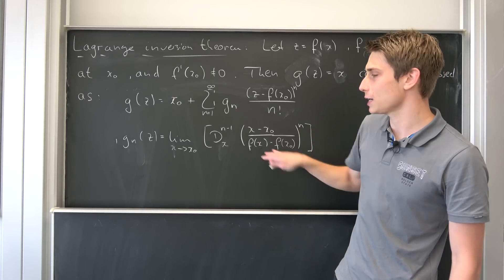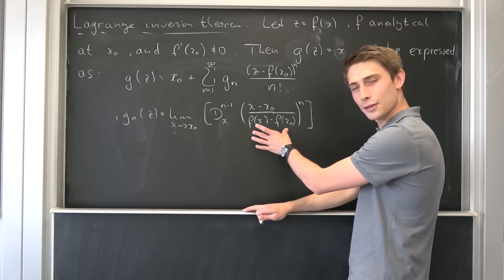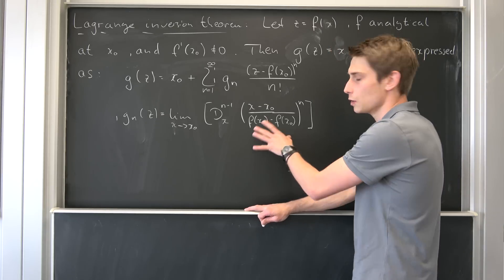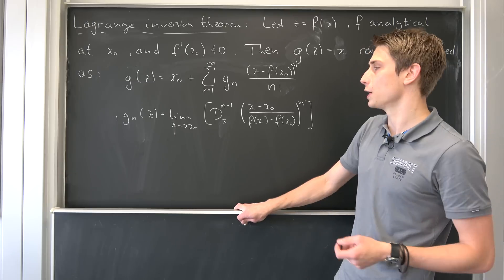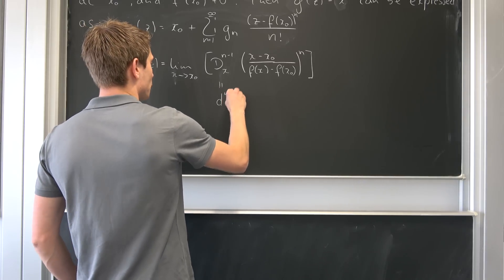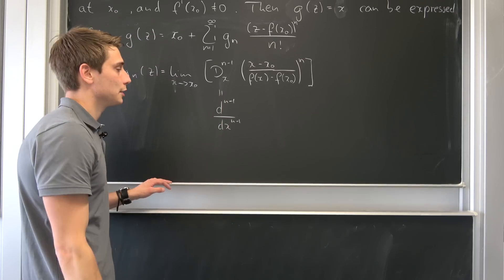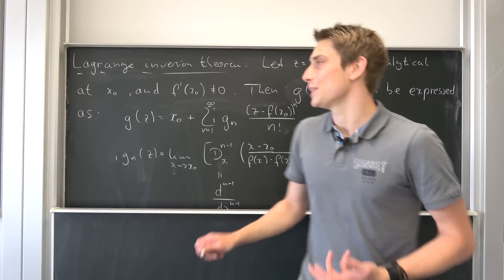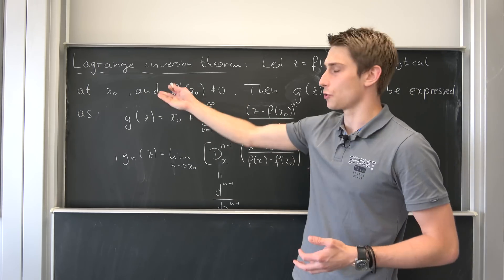We can then express it as this expression right here, with this Gₙ being defined as shown. If you take a look, this thing looks an awful lot like the mean value theorem, so it has something to do with derivatives. This right here is just a differential operator — you can interpret it as the (n−1)th derivative with respect to x. All we really need to do is plug in our stuff and check if all those conditions hold.